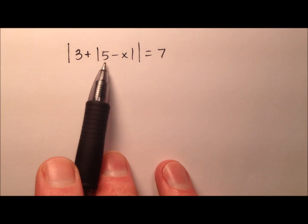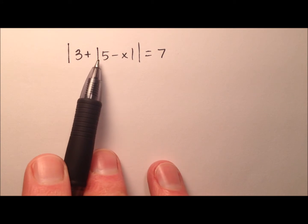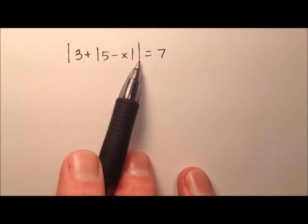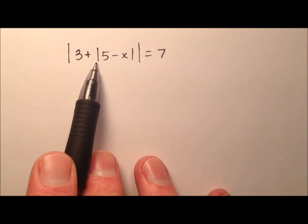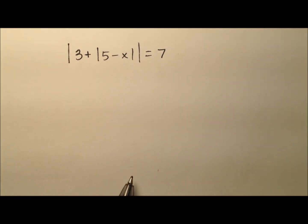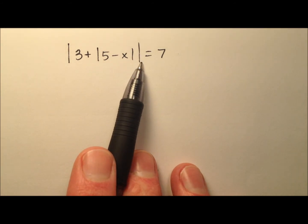In this video, I want to work through this absolute value equation, but you'll notice we have nested absolute value expressions. The whole left side is an absolute value, but inside that I have another absolute value. So we're going to tackle this by doing one absolute value at a time.